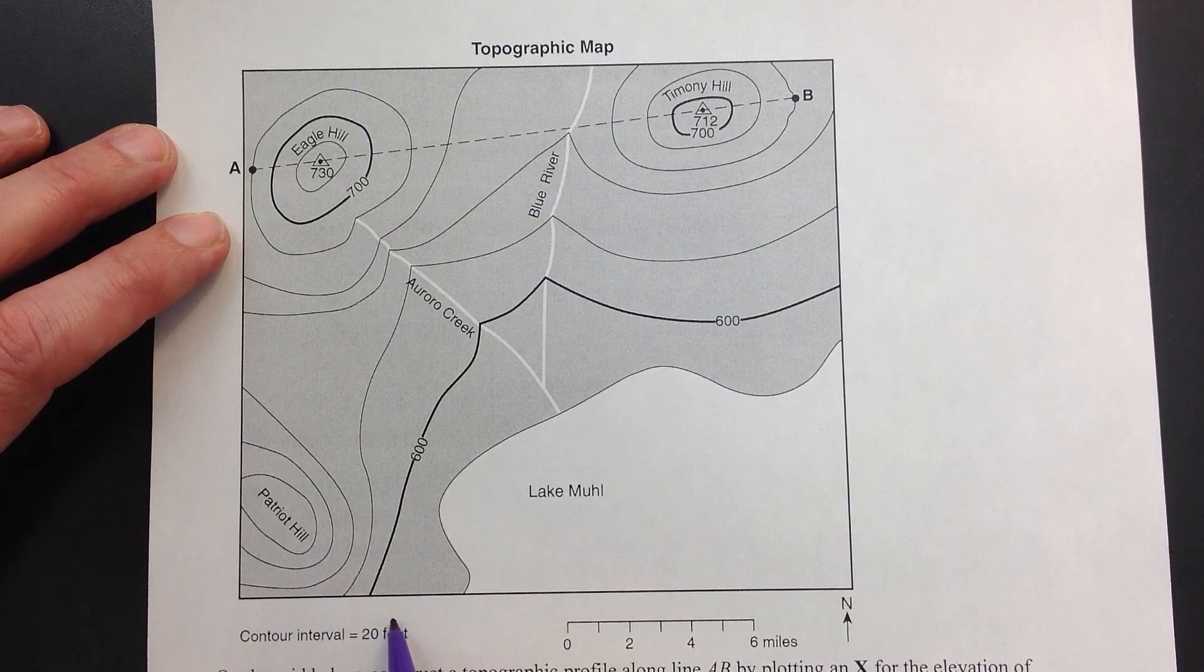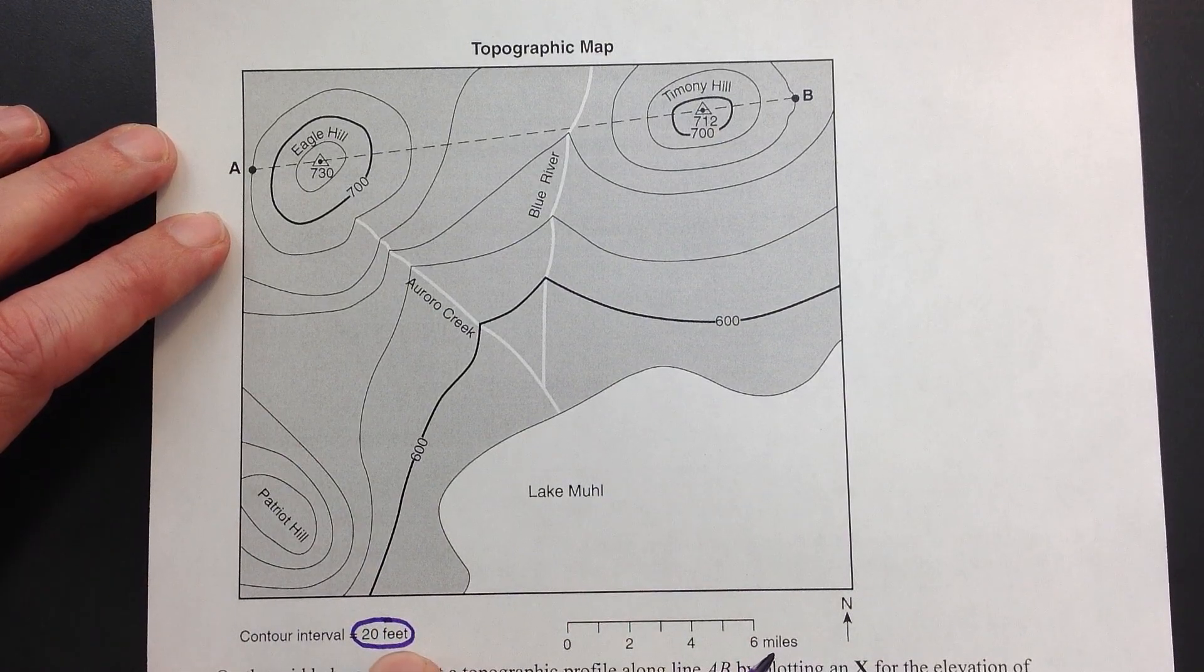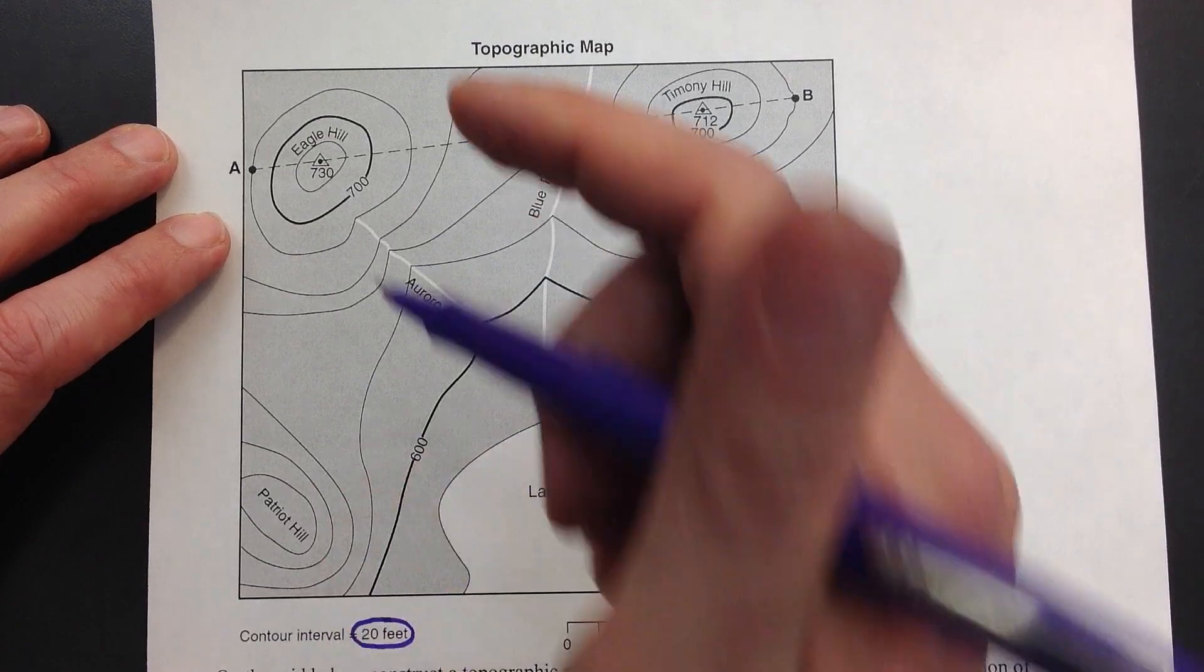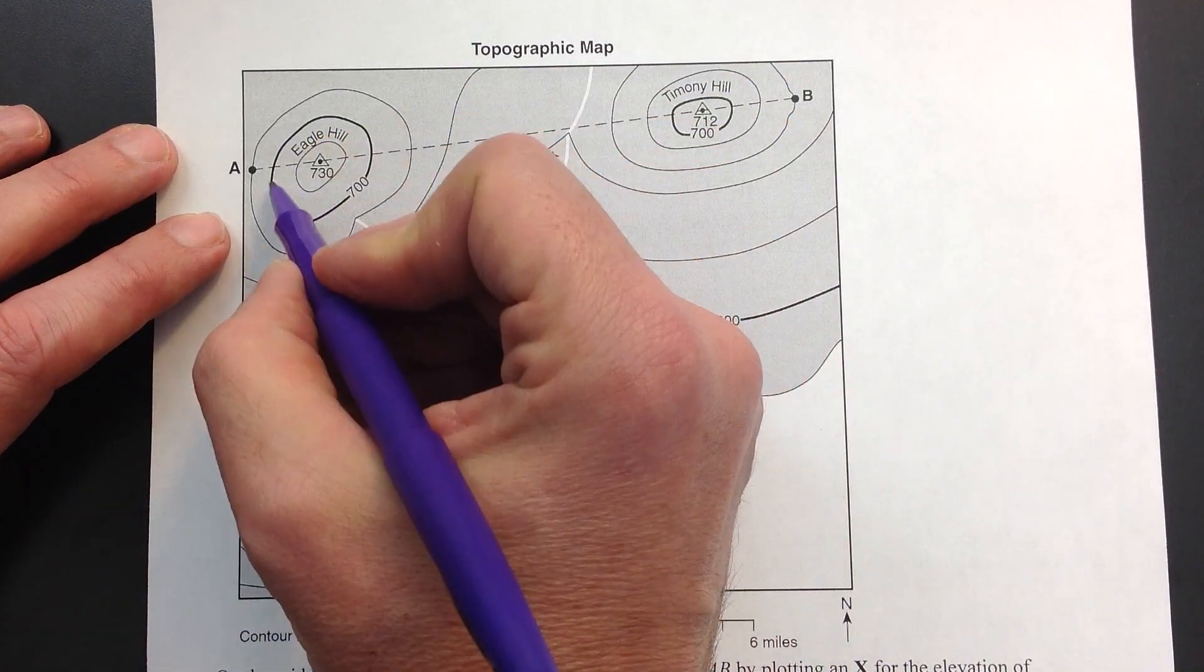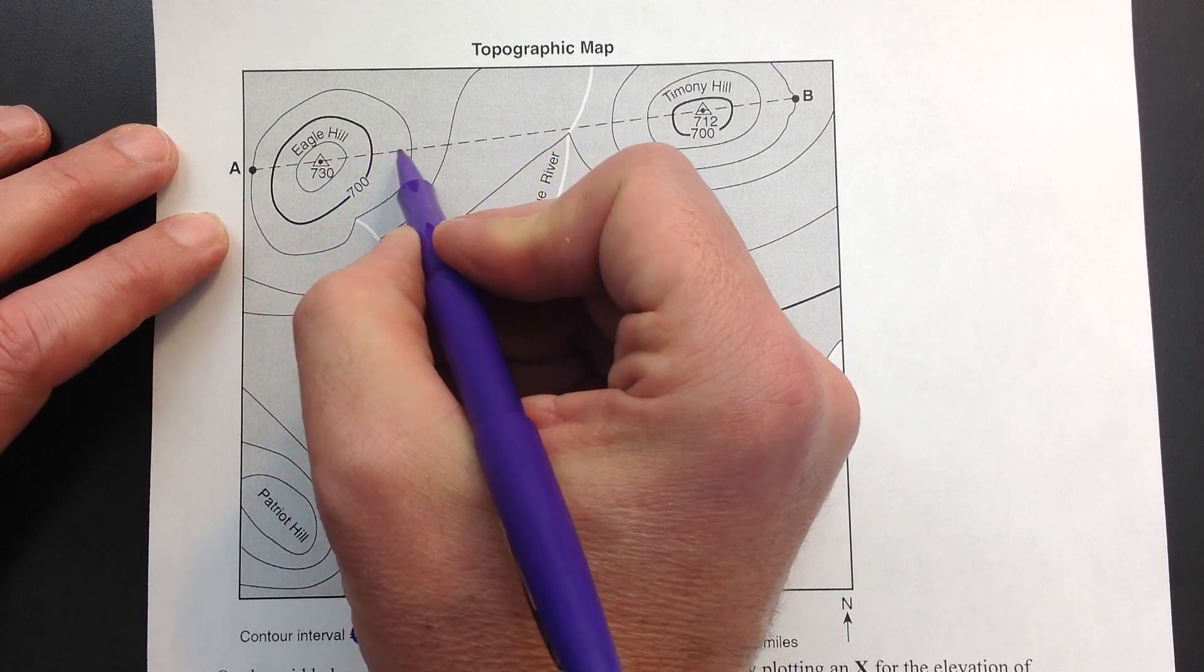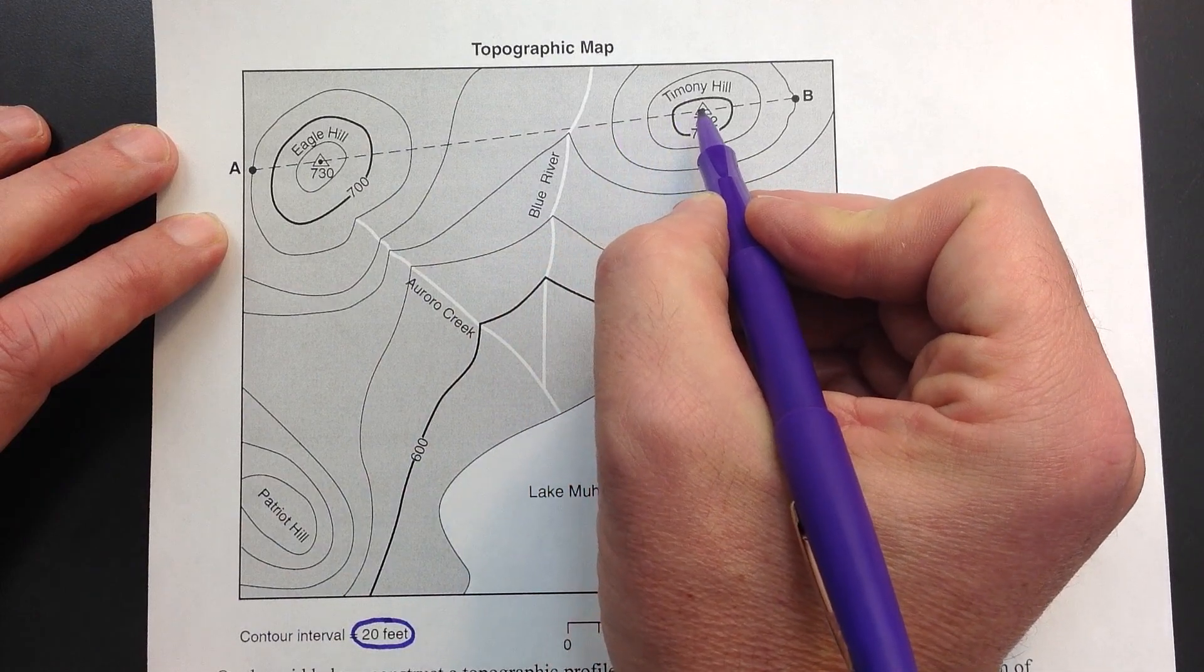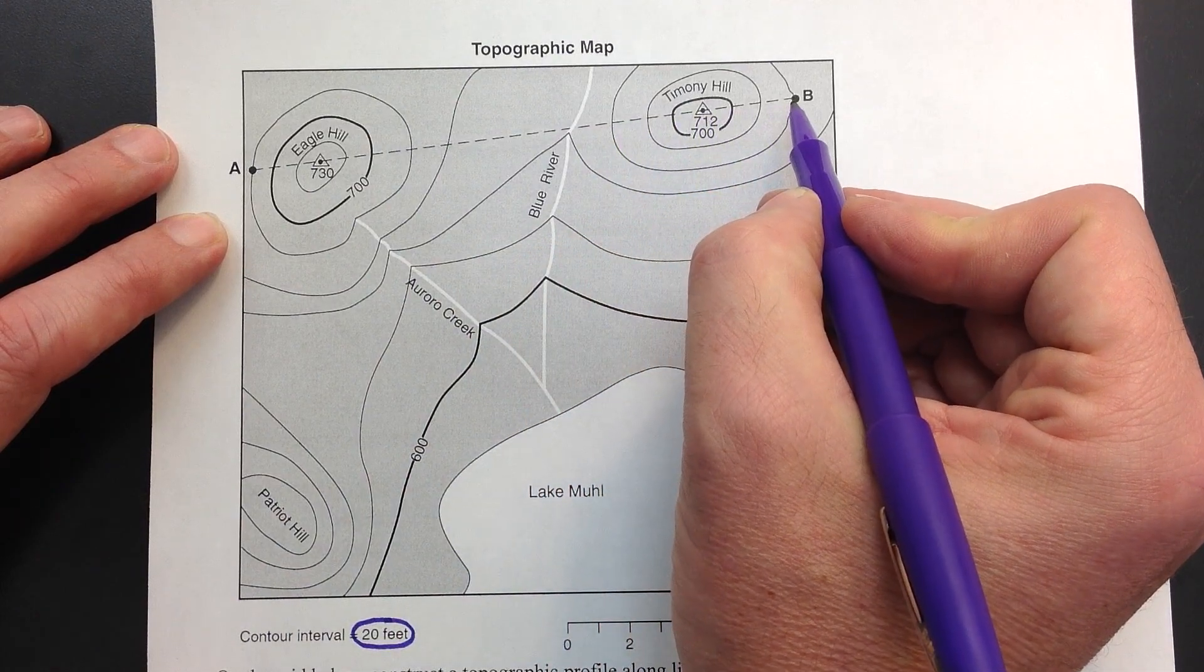At the very bottom of our map we have an interval that's going to tell me exactly what each line is going to go up or down by. Now if this is a hill, I'm going to be going up to the top of the hill, down the eastern side of the hill, down to the river, then back up Timony Hill to the top, and then back down the eastern side again.